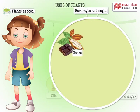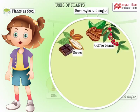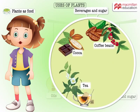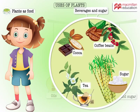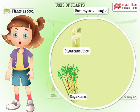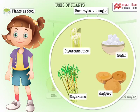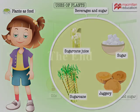Cocoa and coffee beans are from plants. Of course, tea and sugar too are from plants. The juice of sugarcane goes through many processes before it becomes sugar or jaggery.